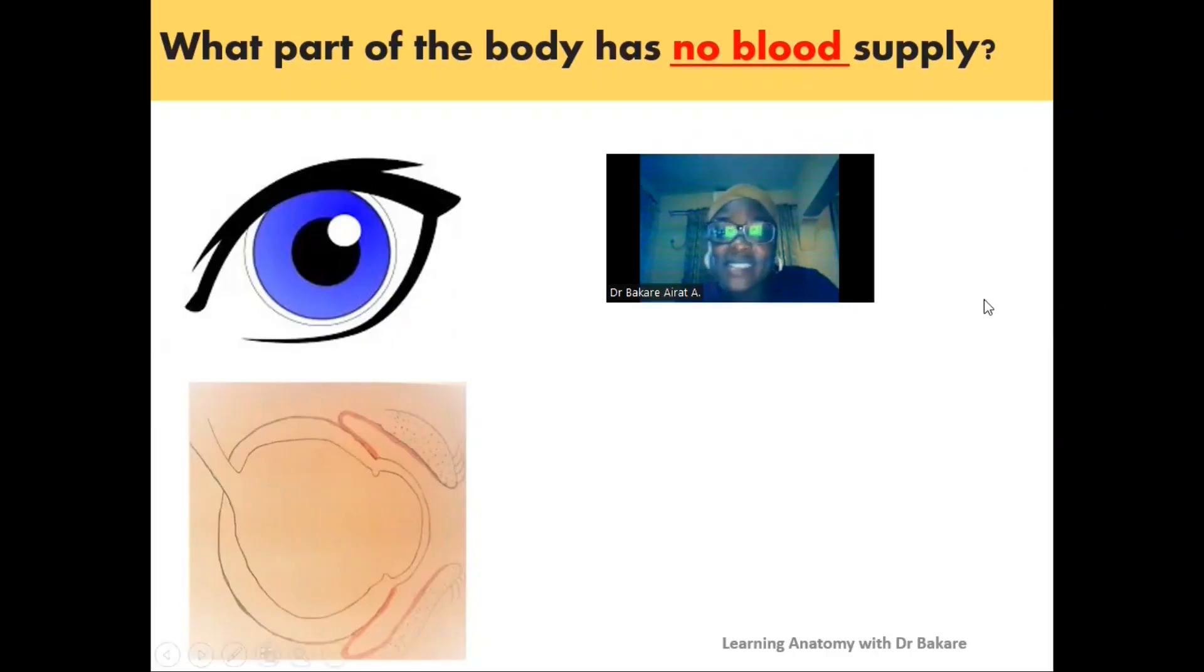Welcome, let's look at this question: what part of the body has no blood supply? The part of the body that has no blood supply is the cornea. The cornea is a transparent membrane or tissue that is seen in the anterior part of the eye.